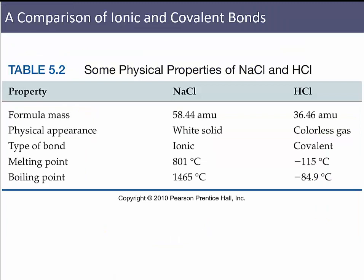Let's compare physical properties of an ionic compound and a polar covalent compound. Sodium chloride and hydrochloric acid (HCl) have similar formula masses, but vastly different physical properties. Sodium chloride is a white solid; HCl is a gas at room temperature. Ionic bonds generally have higher melting points than covalent compounds — sugar melts and caramelizes on a hot stove, but you can't melt salt that way. NaCl melts at 801°C and boils at 1465°C, whereas HCl melts at −115°C and boils at −84°C.